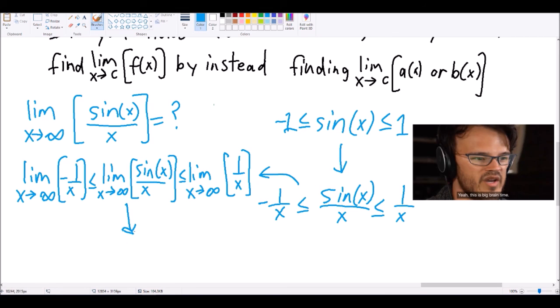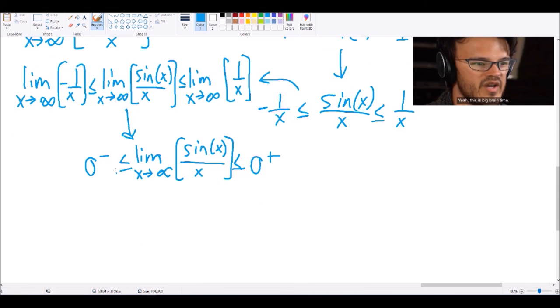And we find that the limit as x approaches infinity of 1 over x is 0 approaching from above, and the limit as x approaches infinity of negative 1 over x is 0 approaching from below. And here we'll say that 0 from above is equal to 0 from below, which ultimately equals 0.